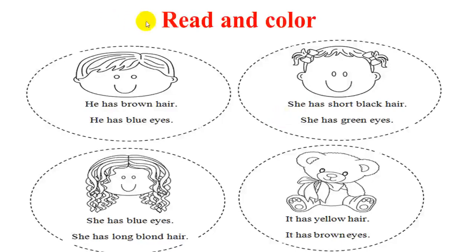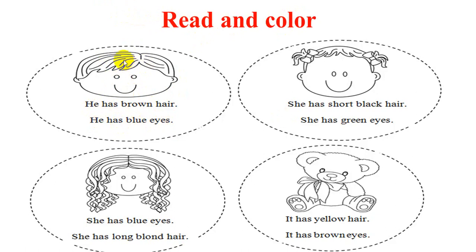The last one: read and color. Picture one: he has brown hair, he has blue eyes. So we color. Watch out.